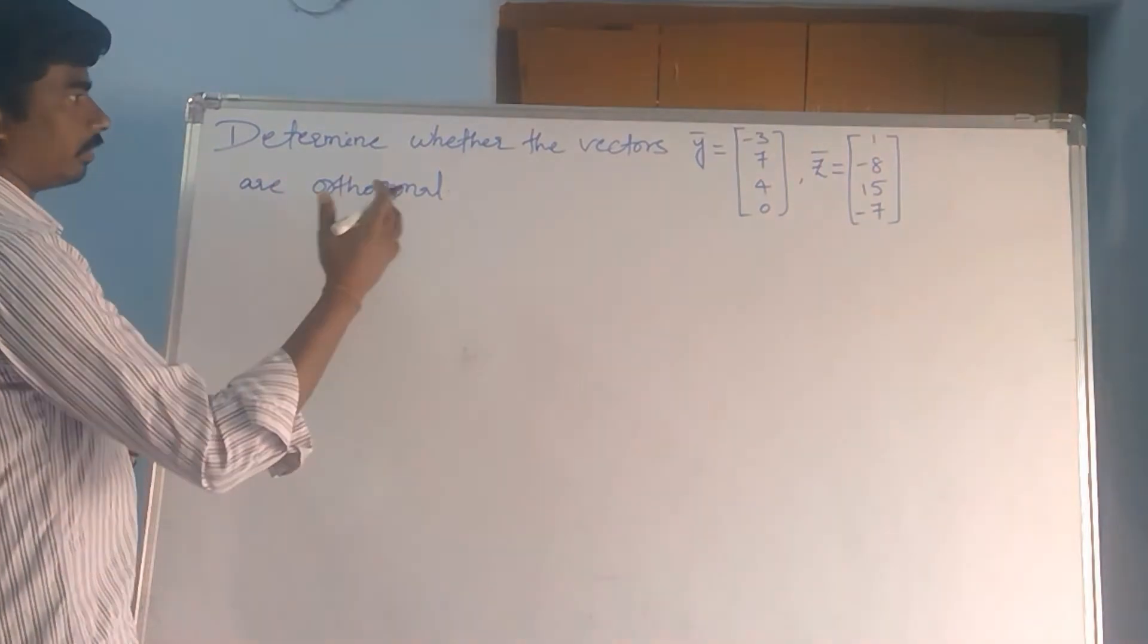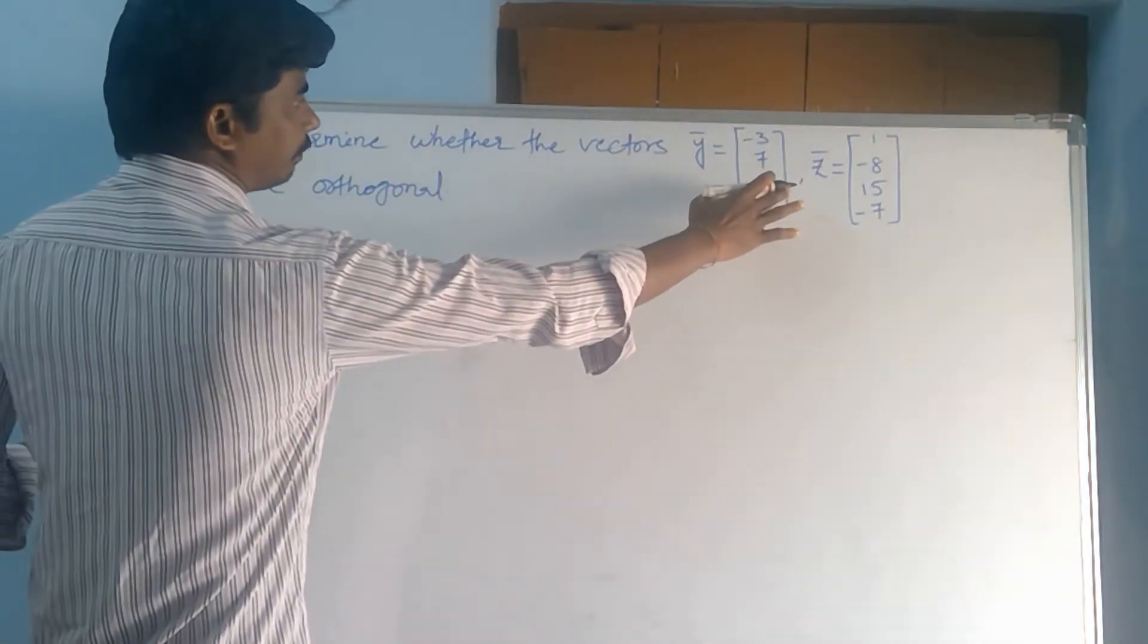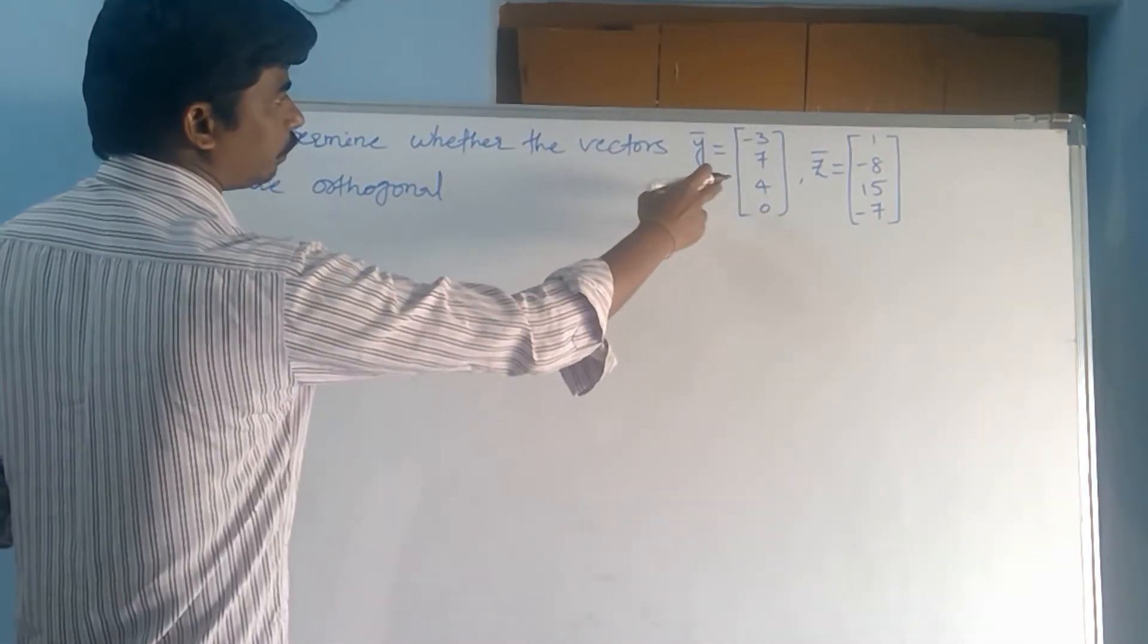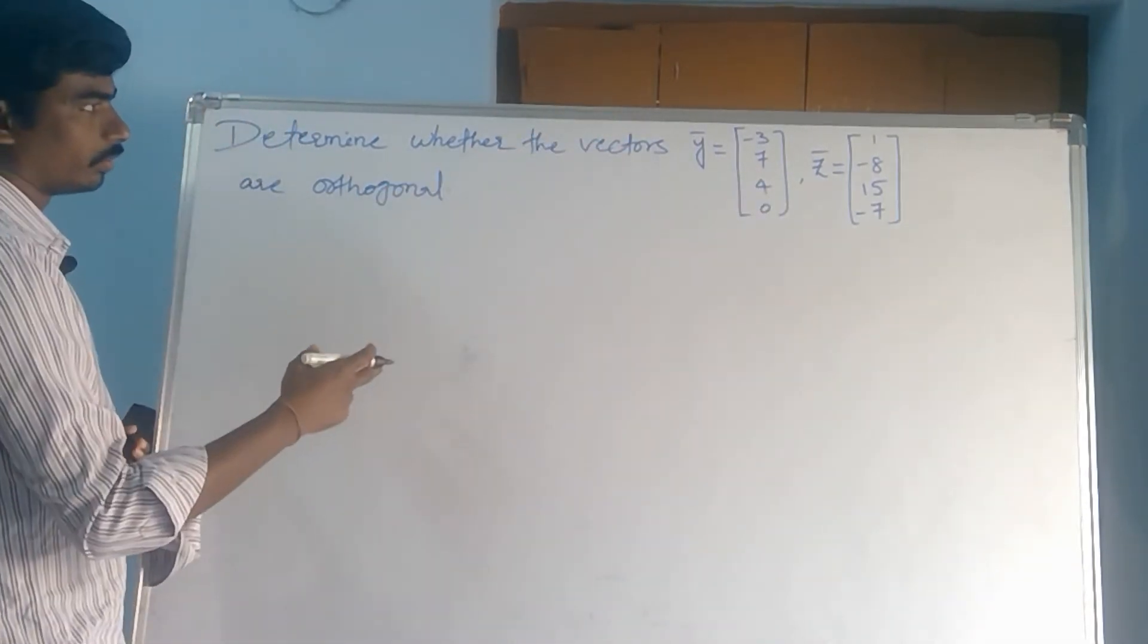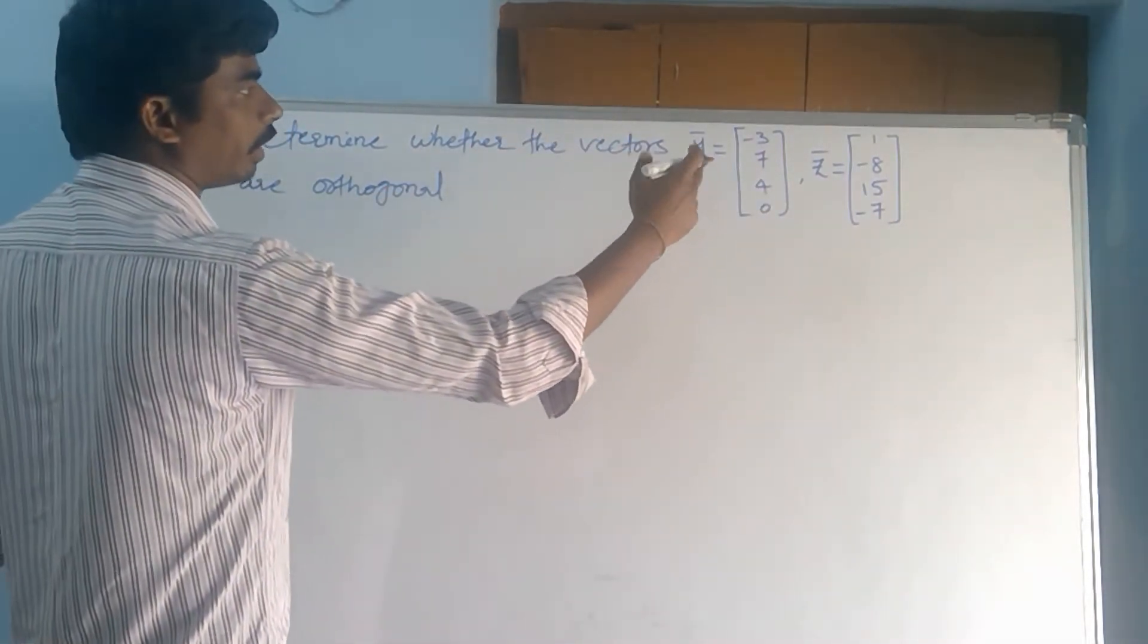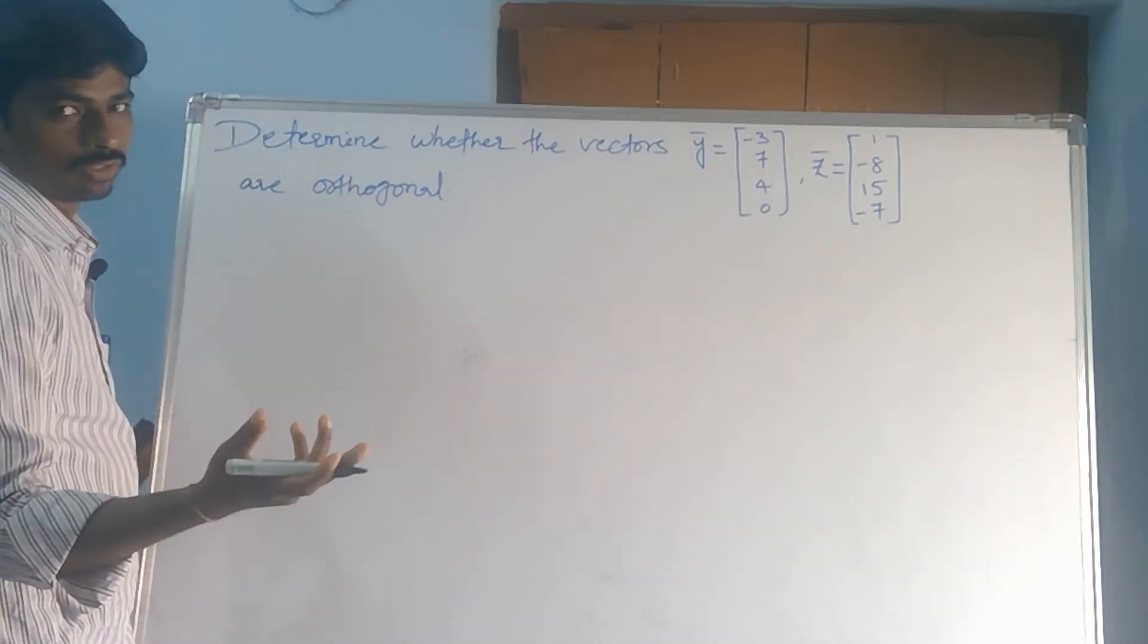What? y bar dot z bar equal to, we are doing here, y bar dot z bar equal to 0, then you will get orthogonal. y bar dot z bar not equal to 0, it is not orthogonal.